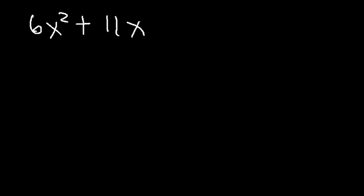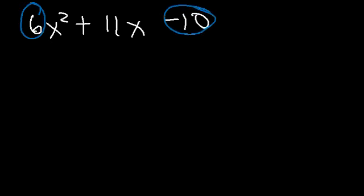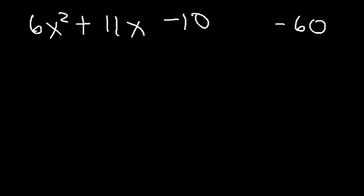Now let's try another problem: 6x squared plus 11x minus 10. How would you factor this expression? Feel free to pause the video and work on this example. The first thing we need to do is multiply 6 and negative 10. 6 times negative 10 is negative 60, and we need to find two numbers that multiply to negative 60 but add to 11.